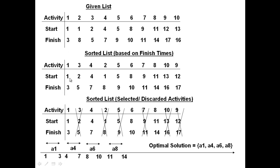Activity one finishes at time three, then activity three finishes at time five, activity four finishes at time seven, and so on. You have to correspondingly write down the activity ID and start times - make sure you do not mix things up. Activity one starts at time one and finishes at three; activity three starts at time two and finishes at five; activity four starts at time four and finishes at time seven. Then just proceed with activities based on finish times.